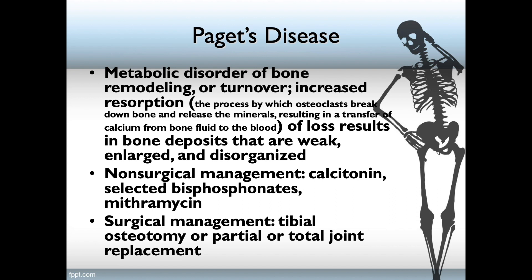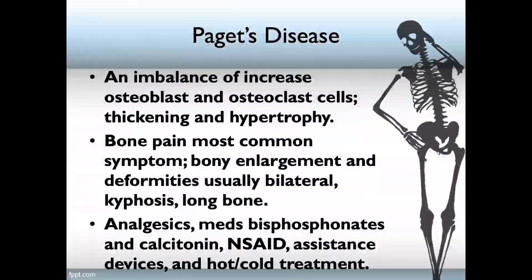Non-surgical management medications include calcitonin, selective bisphosphonates, and mithramycin. Surgical management would include a tibial osteotomy or a partial or total joint replacement. To review: it is an imbalance of increased osteoblasts and osteoclast cells, causing thickening and hypertrophy. Bone pain is the most common symptom. Bone enlargement and deformities are usually bilateral. Kyphosis often occurs, and it usually affects the long bone.